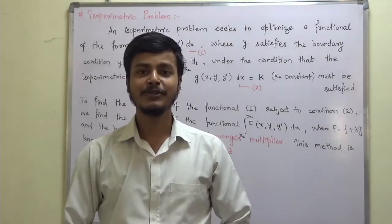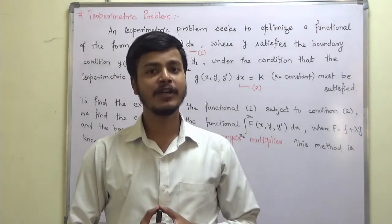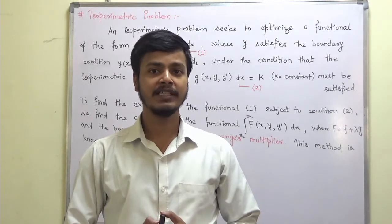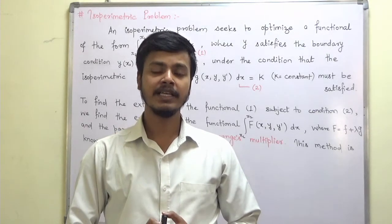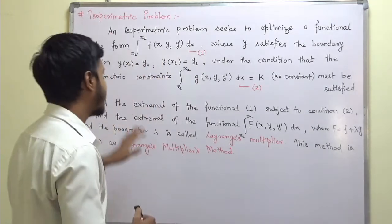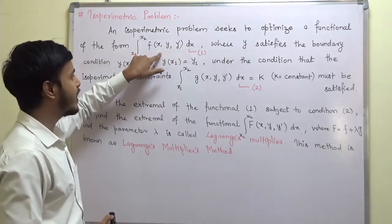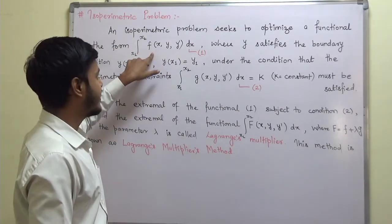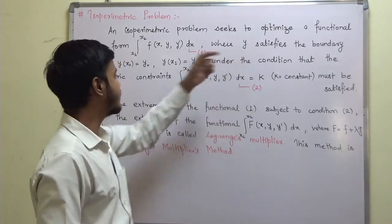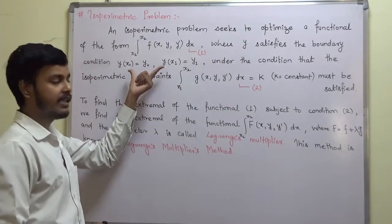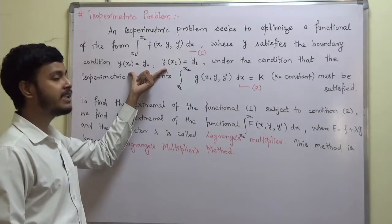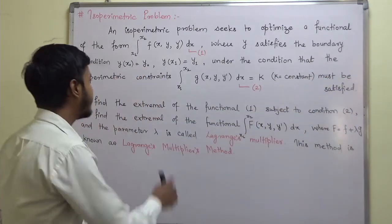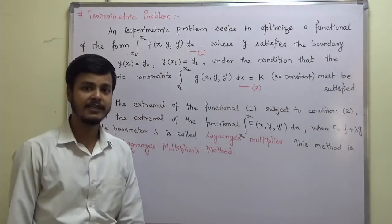Hello and welcome to this learning video. In this learning video we are going to start a brand new topic of this unit, that is isoperimetric problems. These problems seek to optimize a functional of a given form, where the extremal y satisfies the boundary conditions. These boundary conditions would be helpful in getting the arbitrary constants, and the isoperimetric constraint must be satisfied.